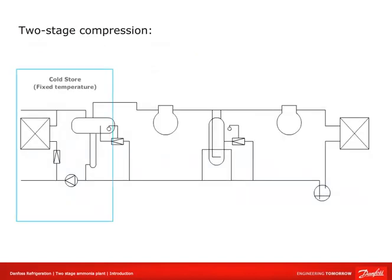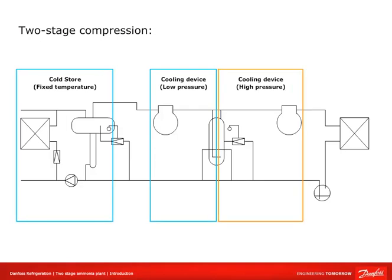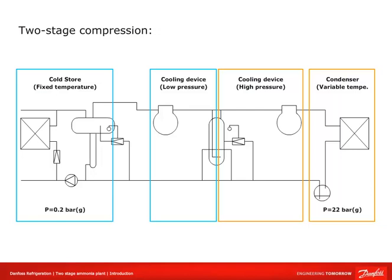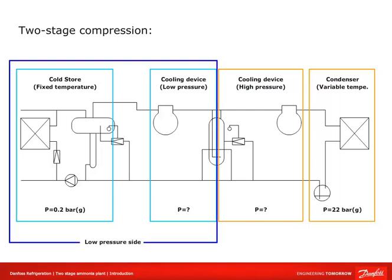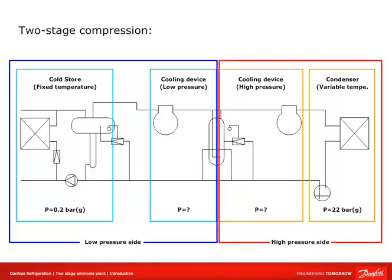In this diagram we have a cold store with a fixed temperature, a cooling device for low pressure, a cooling device for high pressure, and a condenser. The cold store room temperature is fixed; there must be a pressure of 0.2 bar to maintain that temperature, and the condenser pressure is 22 bar. We don't yet know the temperature of the low-pressure cooling device, the discharge temperature, or the suction pressure of the high-pressure cooling device. With the low-pressure and high-pressure sides identified, we can now calculate the two-stage intermediate pressure.